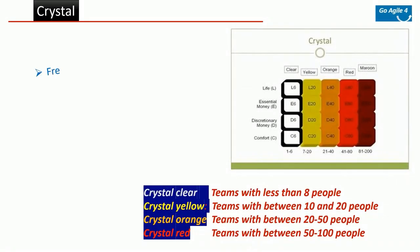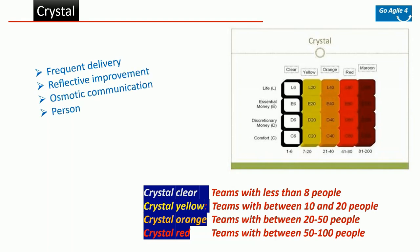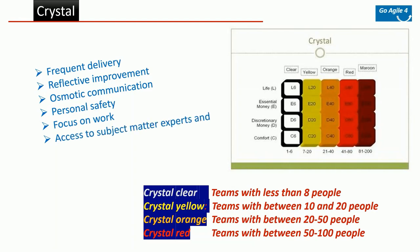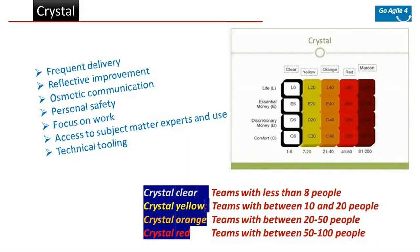The Crystal model broadly includes seven processes: frequent delivery, reflective improvement, osmotic communication, personal safety, focus on work, access to subject matter experts and users, and technical tooling. Osmotic communication means having teams in the same physical space — co-located — so that information flows between team members as if by osmosis. Personal safety means team members should feel safe to discuss ideas openly without fear of ridicule.